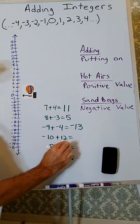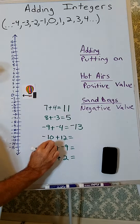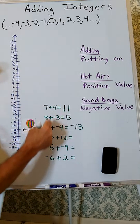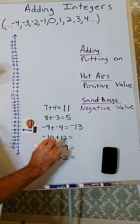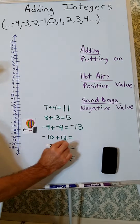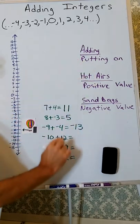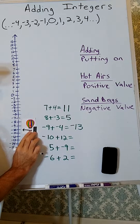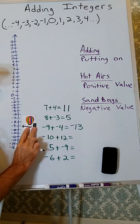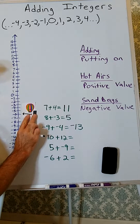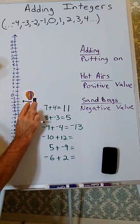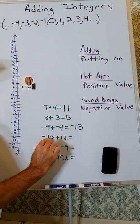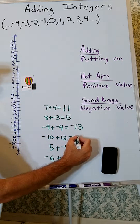Negative 10 plus 12. I put on 10 sandbags — the balloon will go down to negative 10. So that's where we'll start. I'm going to add 12, so I'm going to put on 12 hot airs. If we put on 12 hot airs the balloon will rise 12. So negative 10 plus 12 is 2.